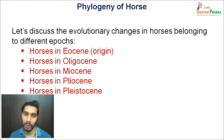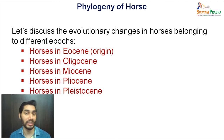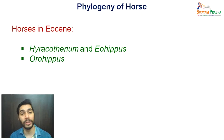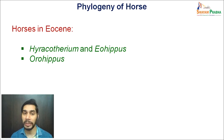Starting with horses of the Eocene epoch, which is the origin point of horse evolution where the first known fossils have been found in the form of Hyracotherium or Eohippus. We will also discuss Orohippus in this epoch and focus on their structures — how they looked, their skulls, their forelimbs and hindlimbs, their feeding habits, and so on, according to these evolutionary trends.